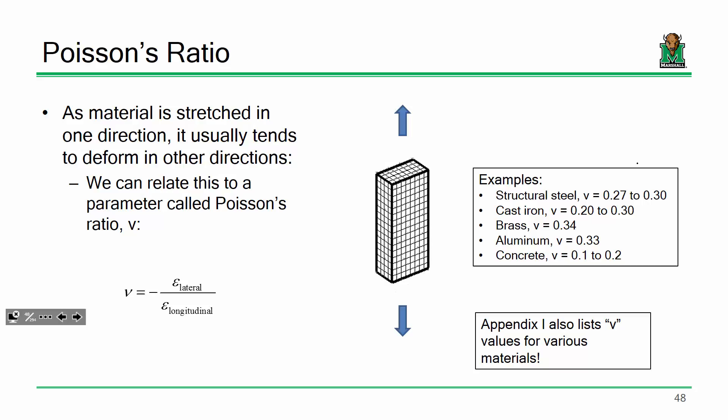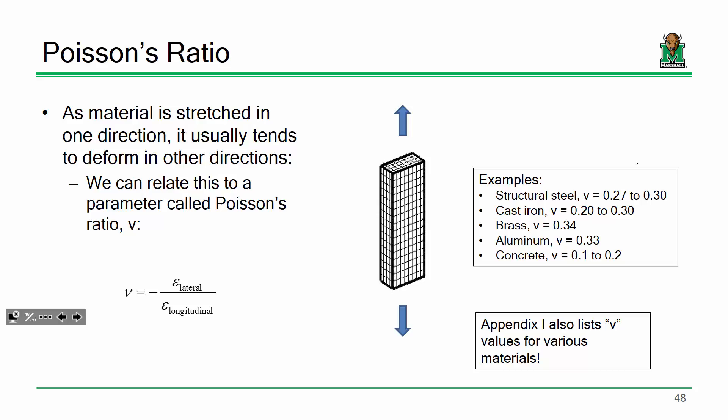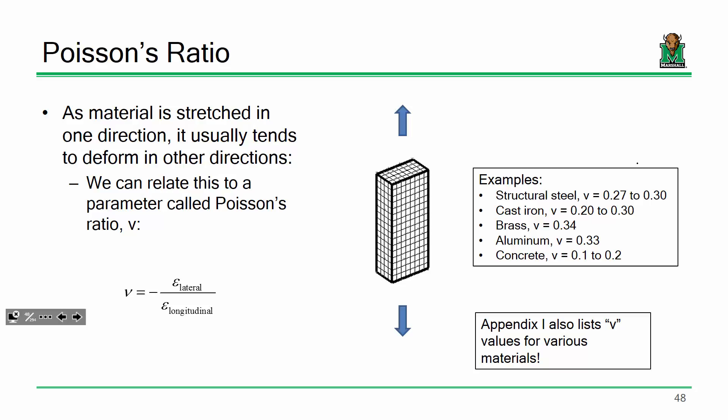You would go down to the lab, take a piece of material, pull on it in the elastic range, measure its strain longitudinally and laterally, and divide the two — there you go. Most likely I would just give you Poisson's ratio on the exam, though I could ask you to interpret what it means.